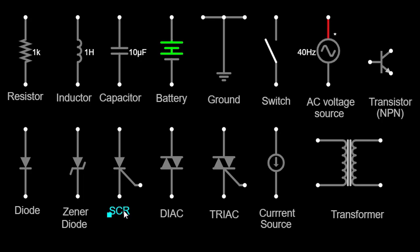The SCR symbol represents a silicon-controlled rectifier. It is a type of semiconductor device used for controlling high-power circuits. The symbol typically consists of three layers with an additional gate terminal. SCRs are commonly employed in motor control, lighting dimmers, and power supply applications.